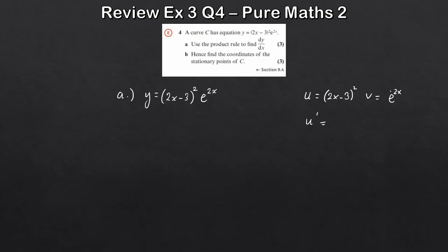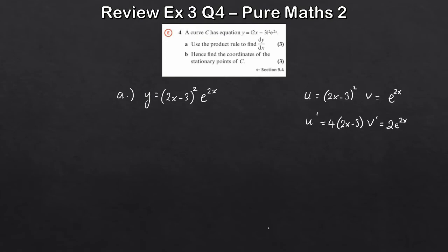Differentiating u: using the chain rule, bring the 2 to the front, multiply by the derivative of the inside, which is 2. So 2 times 2 is 4, and the power reduces by 1, giving u prime equals 4 times 2x minus 3. For v prime: the derivative of 2x is 2, so v prime equals 2e to the 2x. We've now got everything we need to apply the product rule.